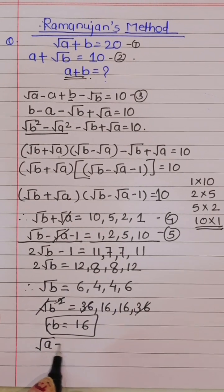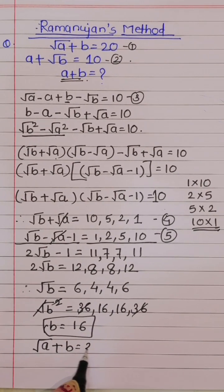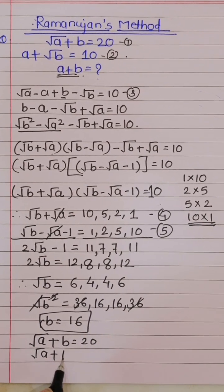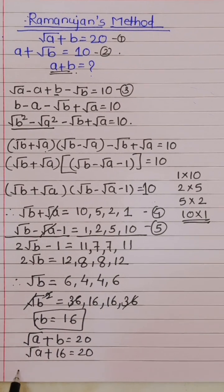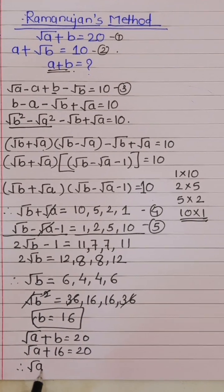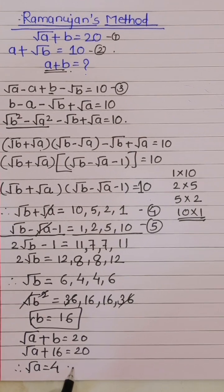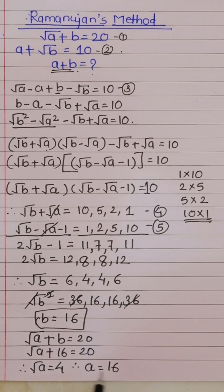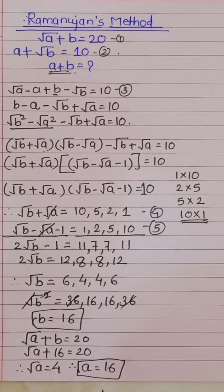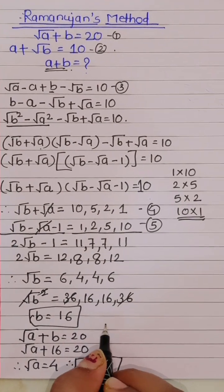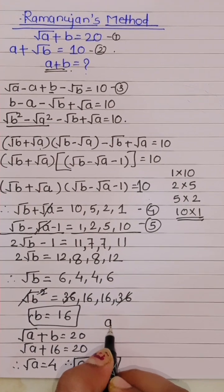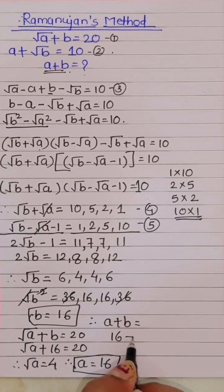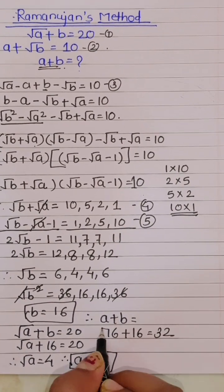From equation 1, square root of (a plus b) equals 20. Substituting b equals 16: square root of a plus 16 equals 20, so square root of a equals 4, and therefore a equals 16. Thus a plus b equals 16 plus 16 equals 32. This is the value of a plus b. Thank you.